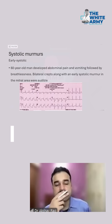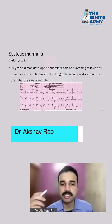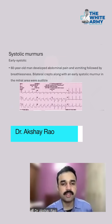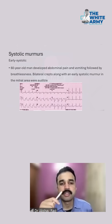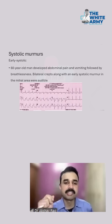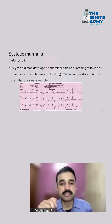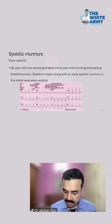One more case — this is of course not a true case but a simulated case. Supposing a 60-year-old man developed abdominal pain and vomiting, then followed by breathlessness, bilateral crepitations, with an early systolic murmur. We discussed about pan-systolic murmur — but what if you hear an early systolic murmur?